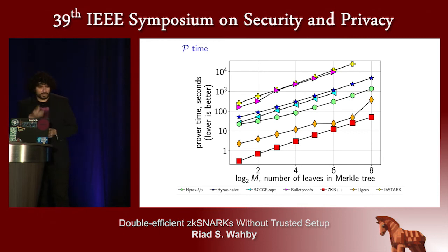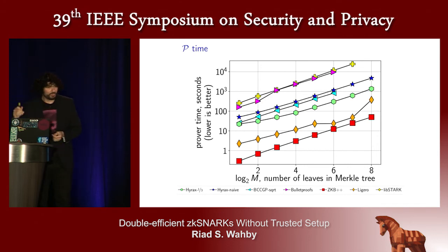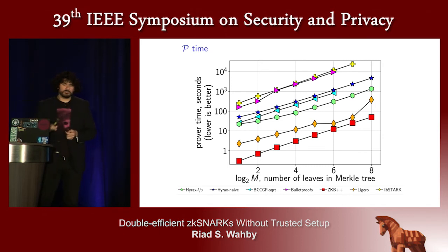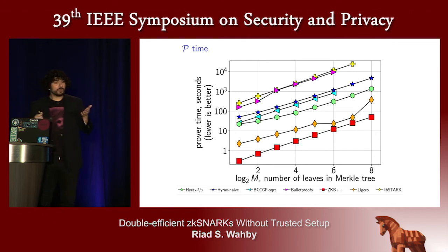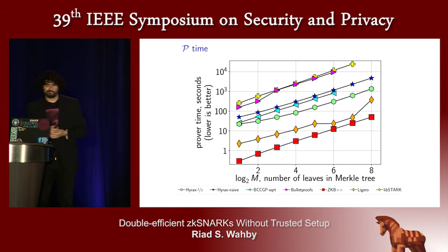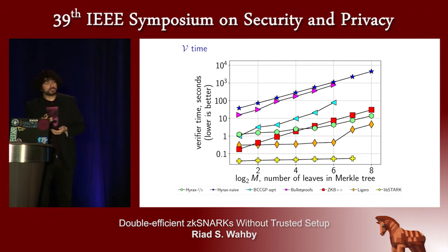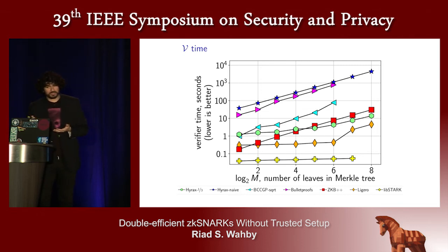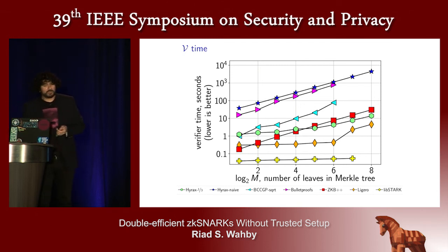How about prover time? Again versus log of the tree size. ZKB++, which had the biggest proofs, has by far the fastest prover. Ligero's prover (orange diamonds) is also quite fast. Hyrax is in the middle of the pack. Bulletproofs had very small proofs but has nearly the longest proof time, almost with LibStark. Hyrax's refinements save roughly a factor of three. Finally, looking at verifier time: LibStark has the best performance, and Ligero has a strong showing too. For big enough problems, Hyrax is faster than ZKB++, which is what we expect because asymptotically ZKB++ is more expensive. And once again, Hyrax Naive (blue stars) is much worse than the refined version.